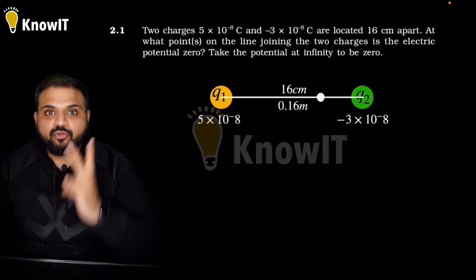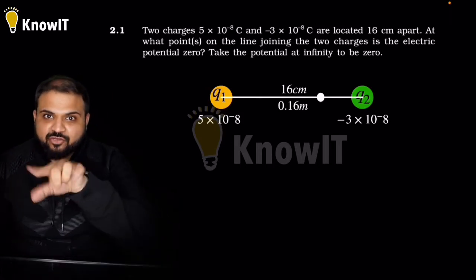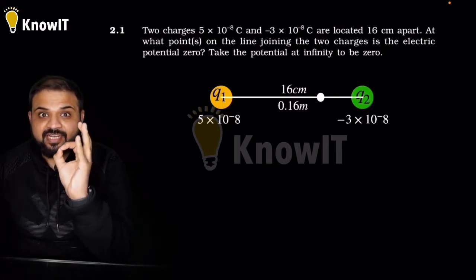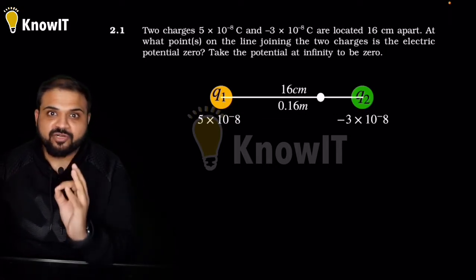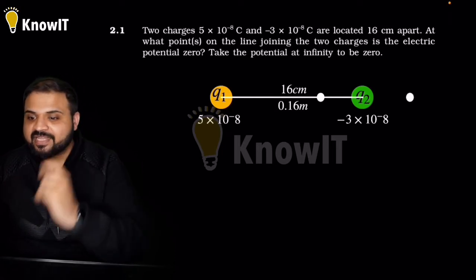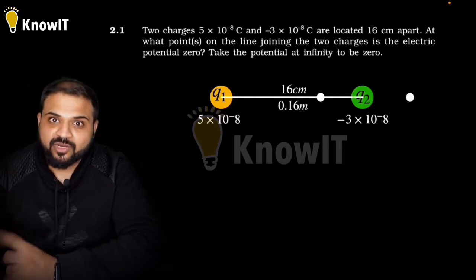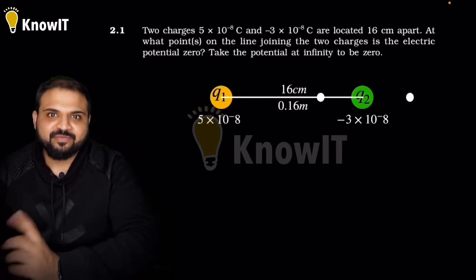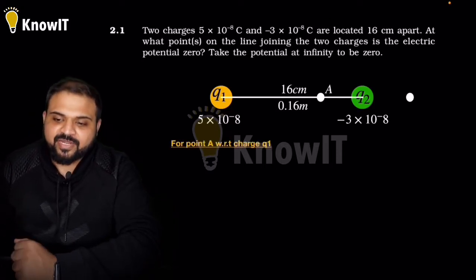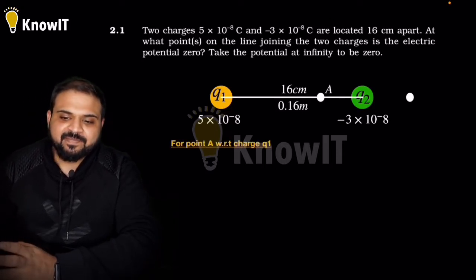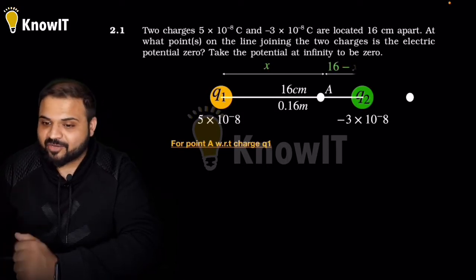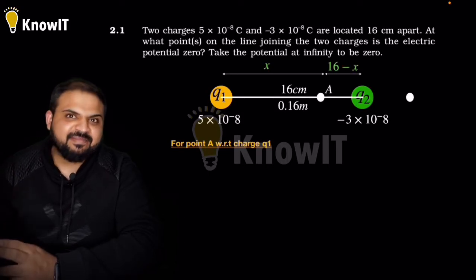Electric potential will be zero at two points — one on the line joining the two charges, and the second one is beyond the smaller charge, that is the one smaller in magnitude. Let's start the calculation with respect to point A. With respect to point A, the distance from Q1 is X, and the remaining distance from Q2 will be 0.16 minus X.